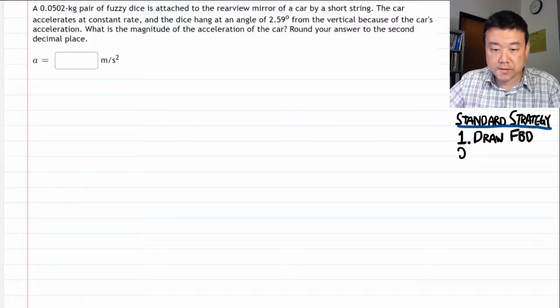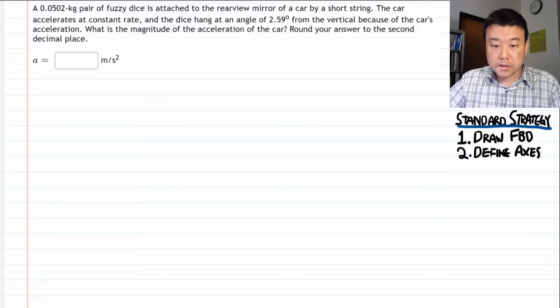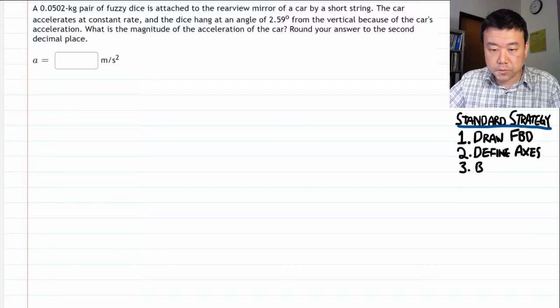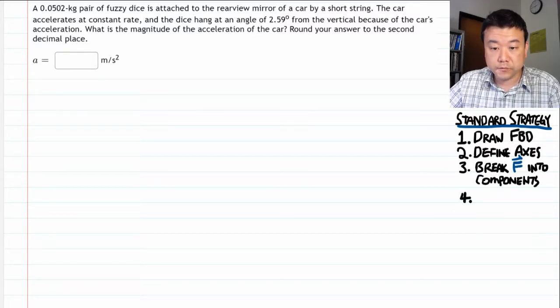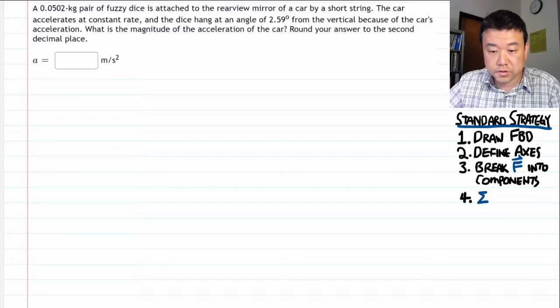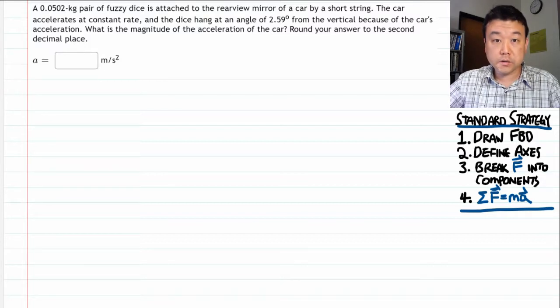And you define the coordinate axis along the direction of acceleration. And you use those axes to break forces into components. And all these steps will have resulted in a diagram that will allow you to write down Newton's second law equations. All right, let's look at the question.